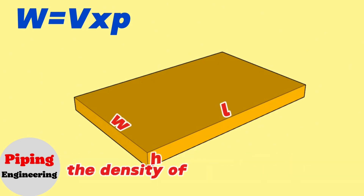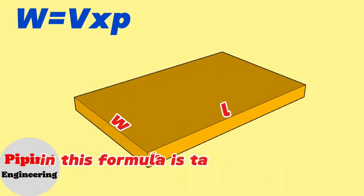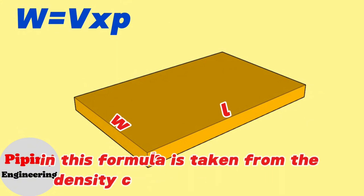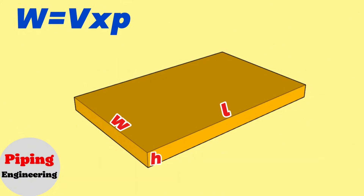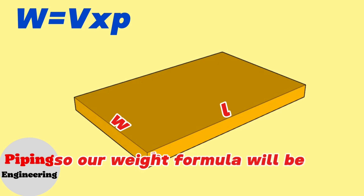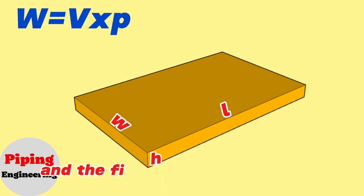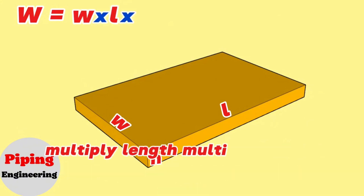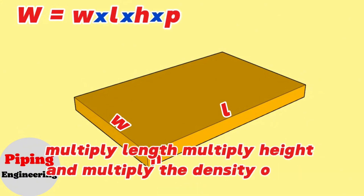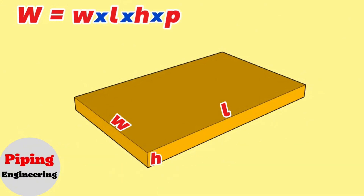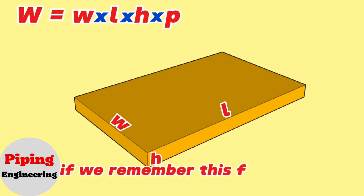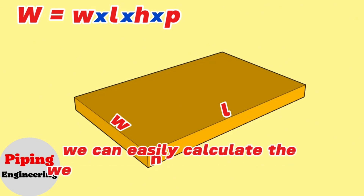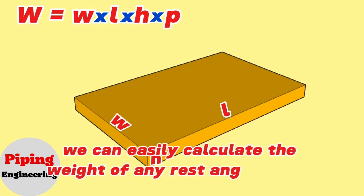The density of the material in this formula is taken from the density chart of the materials. So our weight formula will be updated and will finally be as follows: The weight of the rectangle-form iron steel equals width multiplied by length multiplied by height, and multiplied by the density of the iron. If we remember this formula, we can easily calculate the weight of any rectangle-shaped detail.